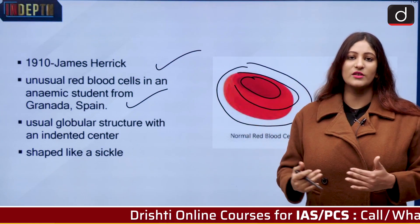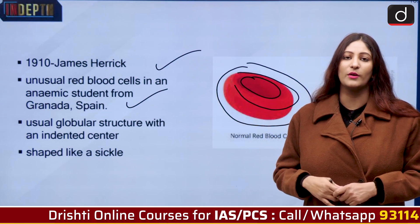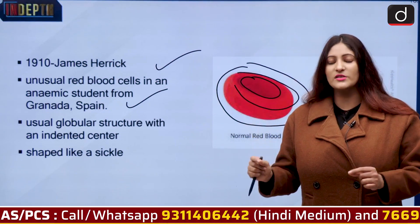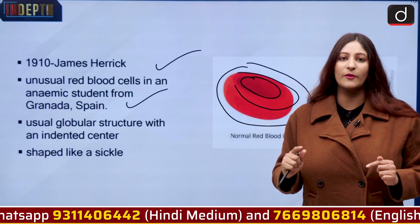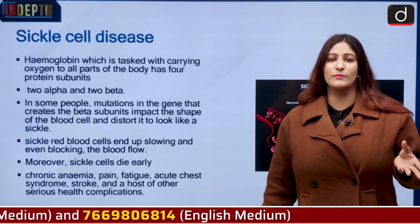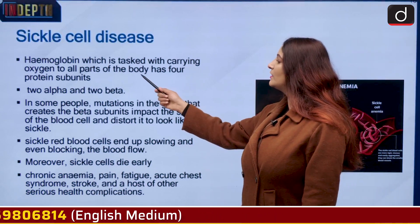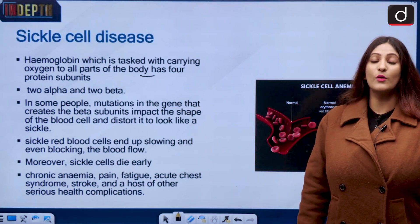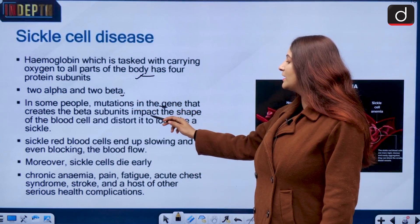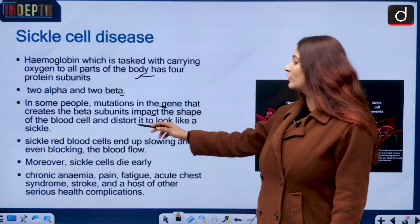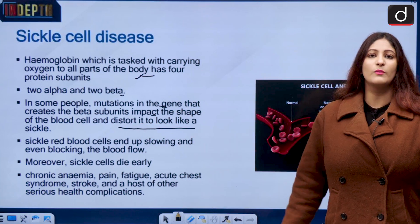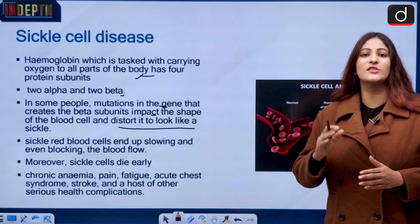Red blood cells carry oxygen to our blood and important parts of the body. But if the red blood cells are unusual in nature, oxygen will not be able to flow through our body easily. Hemoglobin is tasked with carrying oxygen to all parts of the body. It has four protein subunits — two alpha and two beta. In certain people, mutation in the gene creates an impact on the beta subunit, affecting the blood cell. When the mutation occurs in the two beta subunits, the donut-shaped red blood cell becomes sickle-shaped, like a C.